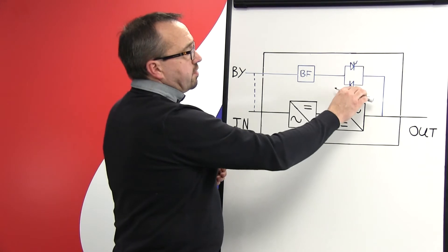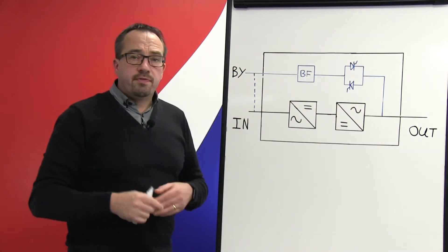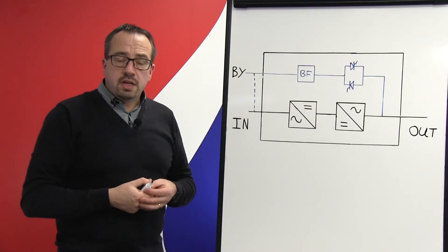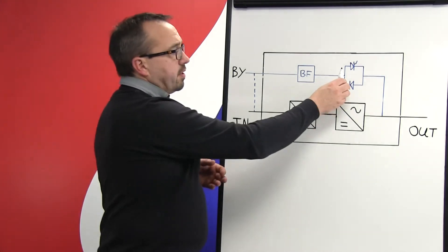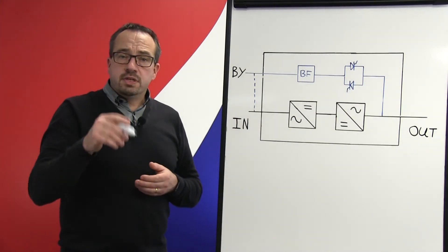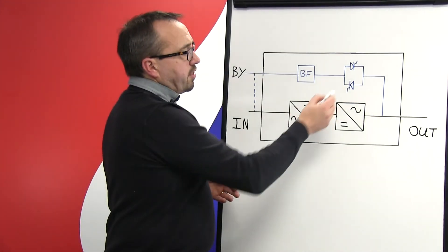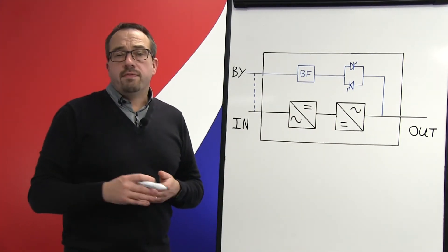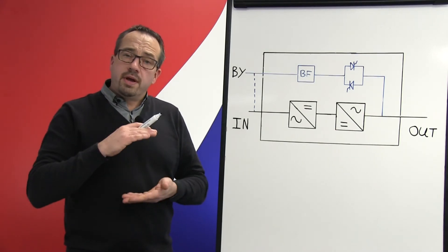In this case we have two thyristors in parallel with one another but facing in opposite directions. The upper thyristor effectively conducts the positive half of the AC voltage waveform, whereas the lower thyristor conducts the lower half of the AC voltage waveform.